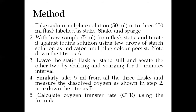The method: take sodium sulfite solution 50 ml into three 250 ml flasks labeled as static, shake, and sparge. Withdraw a 5 ml sample from each flask and titrate it against iodine solution using a few drops of starch solution as indicator until a blue color persists. Note down the titre as A. Leave the static flask still and aerate the other two by shaking and sparging for 10 minutes. Similarly, take 5 ml from all three flasks and measure the dissolved oxygen as in step 2. Note down the titre as B.